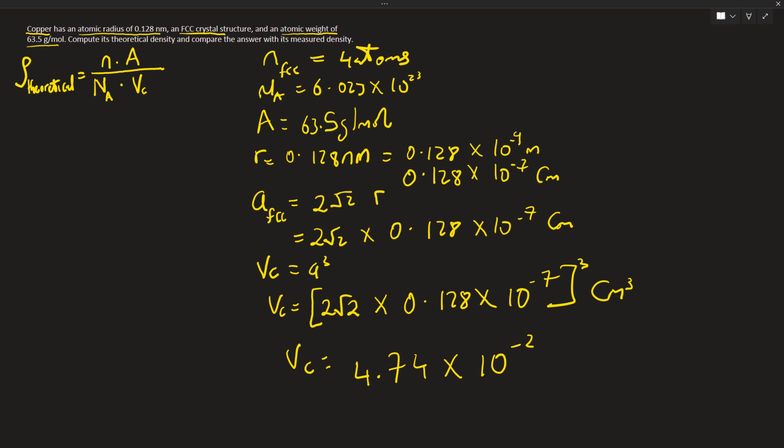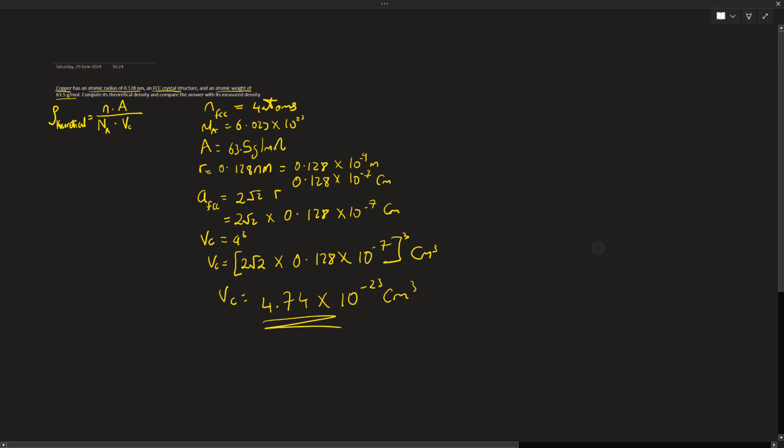This gives us Vc equal to 4.74 times 10 to the power of minus 23 centimeters cubed. Now we can go ahead and solve for our theoretical density.